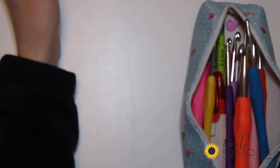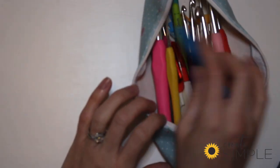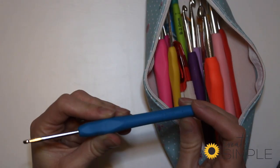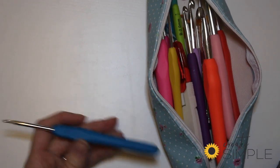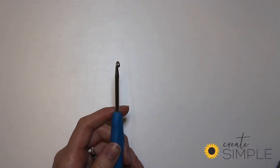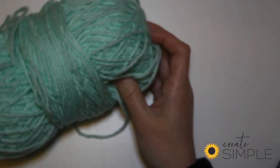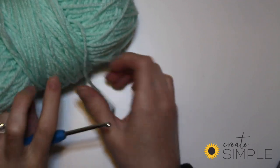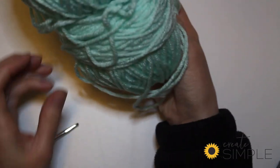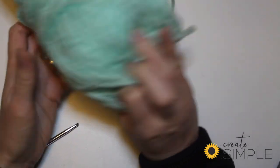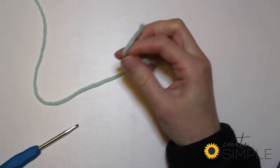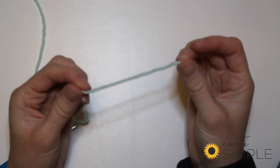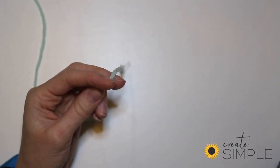We're going to go ahead and get started. I'm going to use a size 4 millimeter crochet hook for our intro today, and then I just have some really basic yarn. I just wanted to have something that's easy to see. We'll find the end of our yarn. Here's our end.